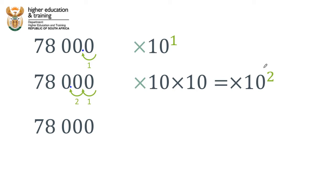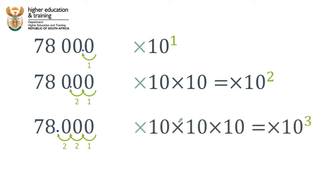If we move the decimal point three places, that's the same as dividing by 1,000, so we need to compensate by multiplying by 1,000, which is 10 times 10 times 10, or 10 to the power 3. We can see the pattern: 1 place corresponds to exponent 1, 2 places corresponds to exponent 2, and 3 places corresponds to exponent 3.